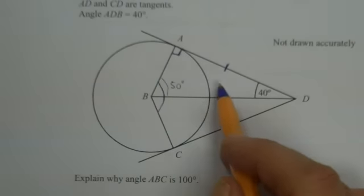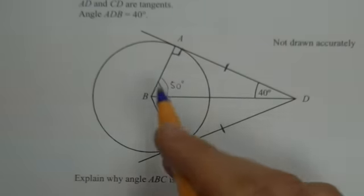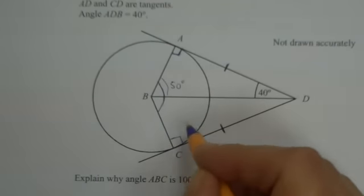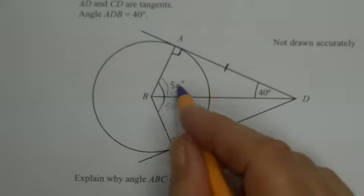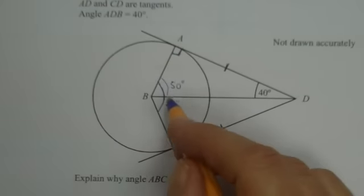Now these two triangles are exactly the same as each other, and therefore this is also 50 degrees. And that's why ABC is 100 degrees.